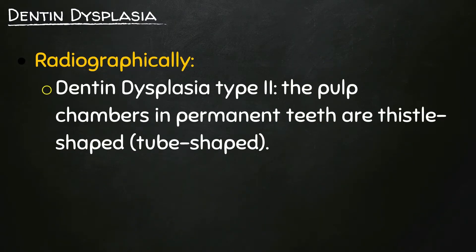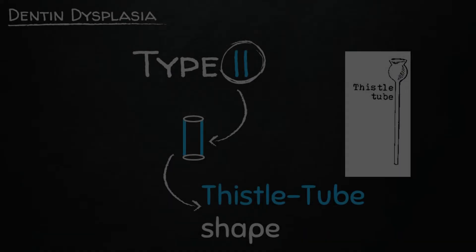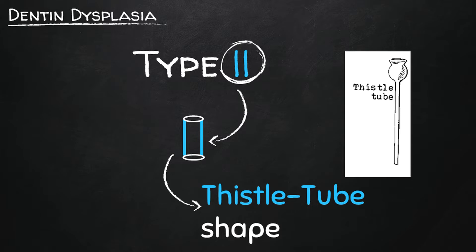In Denton dysplasia type 2, the pulp chambers in permanent teeth are thistle tube shaped. Now here we start to mix up a little bit between type 1 and type 2. The number 2 looks exactly like a tube. So now we know that type 2 is tube shaped, while type 1 — the D — is crescent shaped.